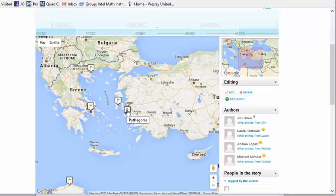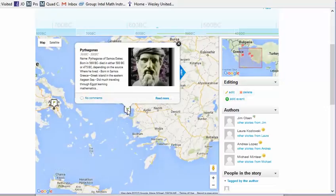Pythagoras was from the island of Samos which is right off of present-day Turkey. He lived about 500 BC and studied triangles and Pythagorean triples like the 3-4-5 triangle. 3 squared plus 4 squared equals 5 squared.